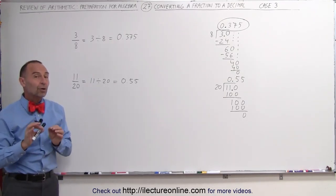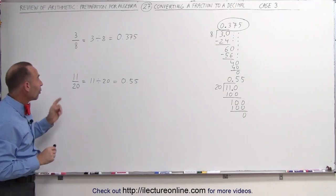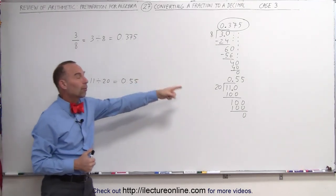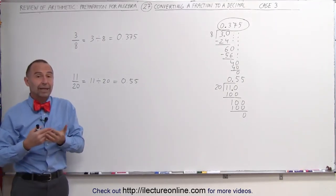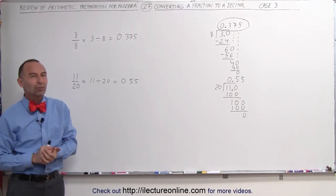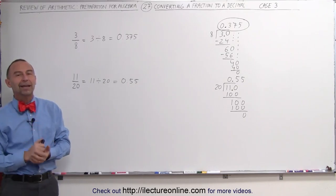On the next video, we're going to show examples where we can't get a zero remainder. Then how do you turn a fraction into a decimal when you never get a zero remainder? Well, stay tuned and we'll show you how to do that. That will be case 4.